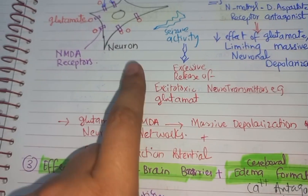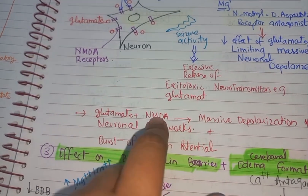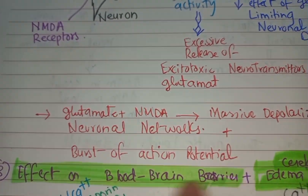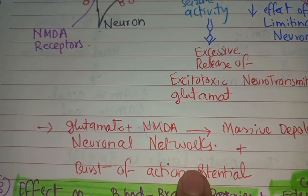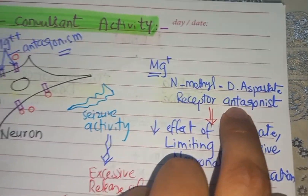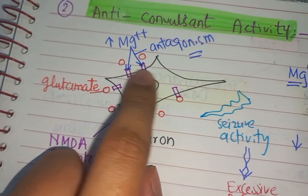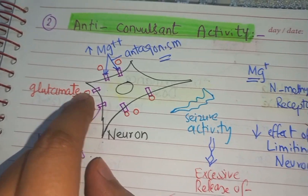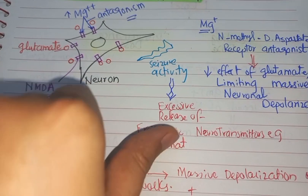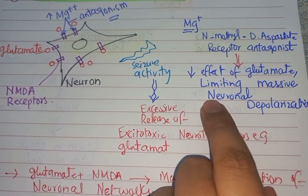In the eclamptic patient, the release of glutamate binds with NMDA receptors causing depolarization and burst of action potential. Magnesium sulfate works as an NMDA receptor antagonist — it binds with the NMDA receptors so that glutamate cannot bind with them, and hence it limits the massive neuronal depolarization and reduces seizure activity.